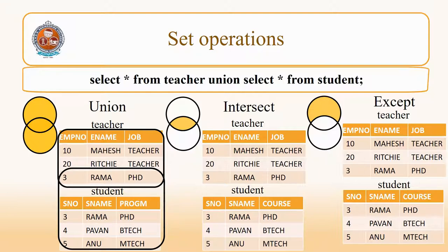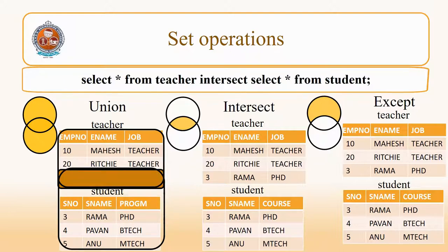Let us see the intersection operation between the teacher and student tables. That means, the teachers who are also students — that is the query we want. You apply the INTERSECT operation: SELECT * FROM teacher INTERSECT SELECT * FROM student. The result will be 3 Rama PhD.